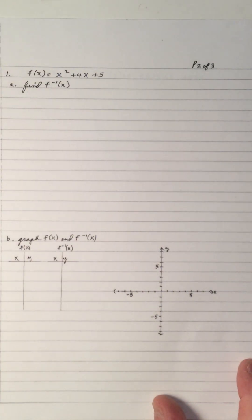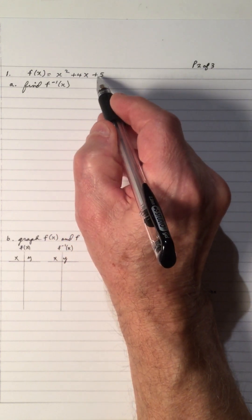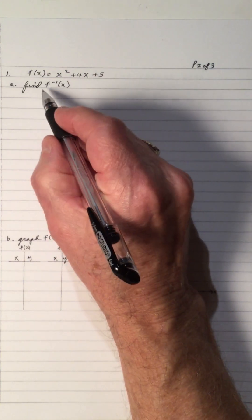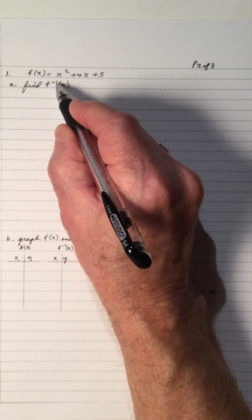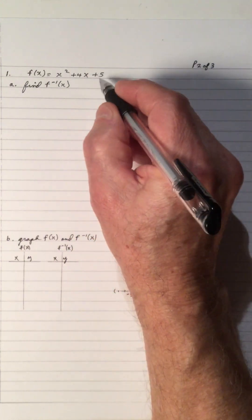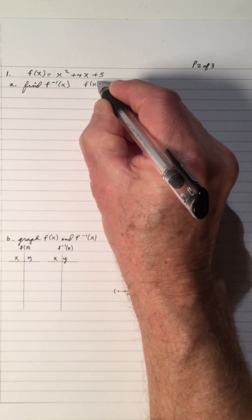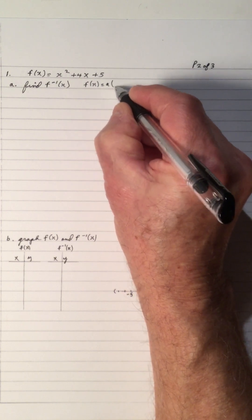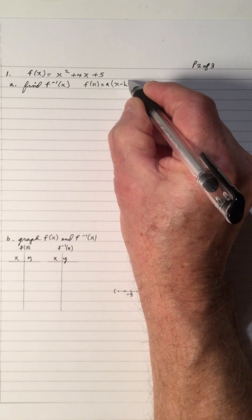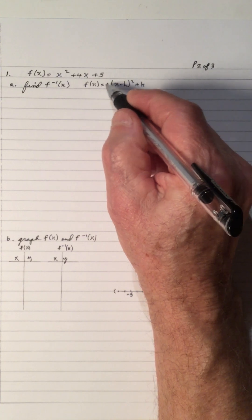Welcome to my video on the inverse of a parabola, part 4. Number 1: f of x equals x squared plus 4x plus 5. We want to find the inverse, f to the negative 1. But to do that we need to have the equation of f of x in this form: f of x equals a times x minus h squared plus k. It has to be in this form in order to solve it for y.